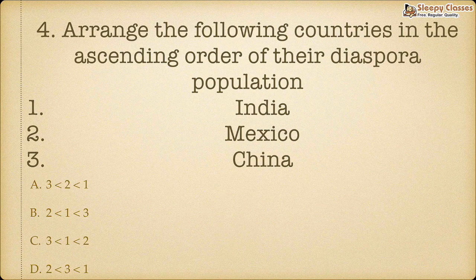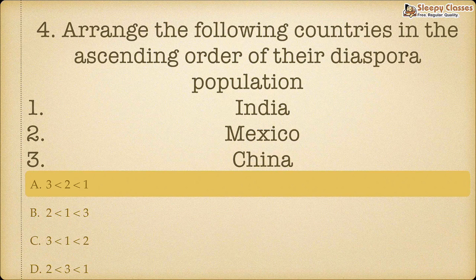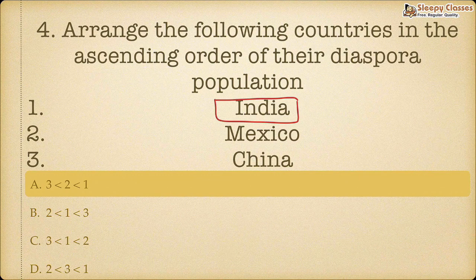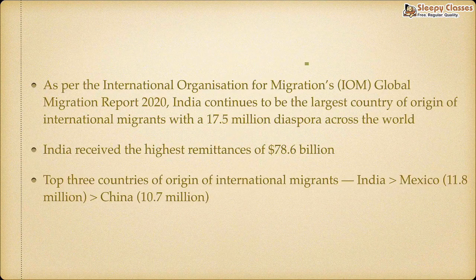The correct answer is A — 3, 2, 1. China has the smallest diaspora among the three, followed by Mexico, and the largest diaspora is India's. The International Organization for Migration's Global Migration Report 2020 has stated that India has the largest diaspora population living in other countries.